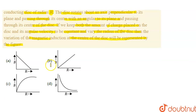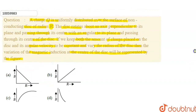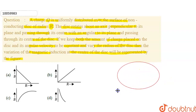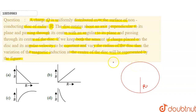So here we have to show the variation in the magnetic induction and the radius. The charge Q is uniformly distributed over the surface of a non-conducting disk of radius R, and this disk is rotated about an axis perpendicular to its plane and passing through its center with angular velocity omega.